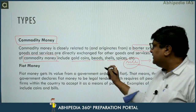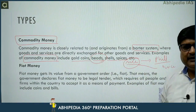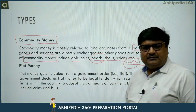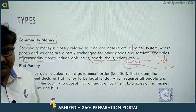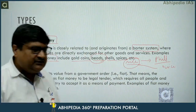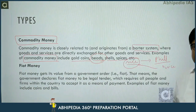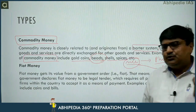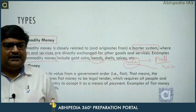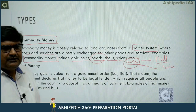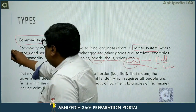Beads also came to be used as a medium of exchange for many years. Wherever certain commodities were popular, they gradually became the medium of exchange. That was the first type of money — commodity money.